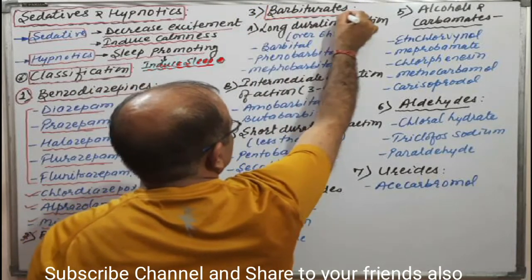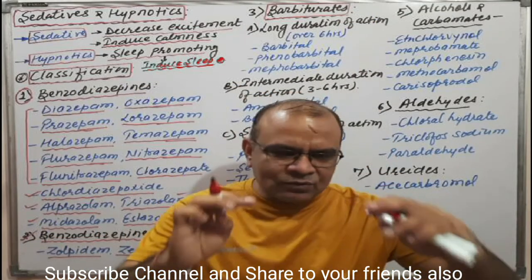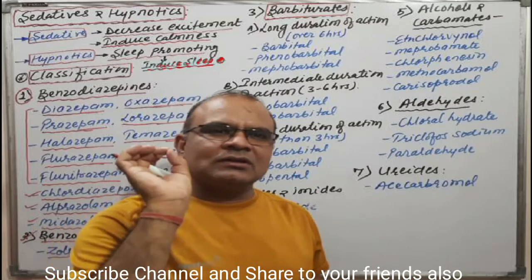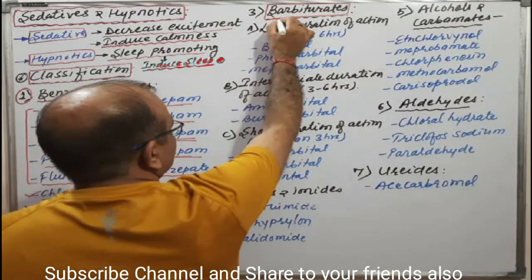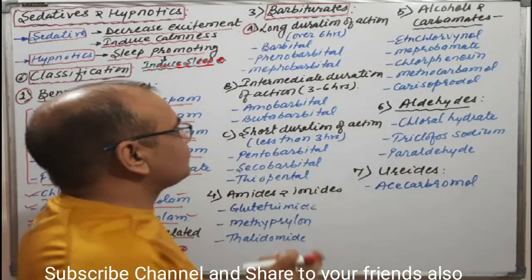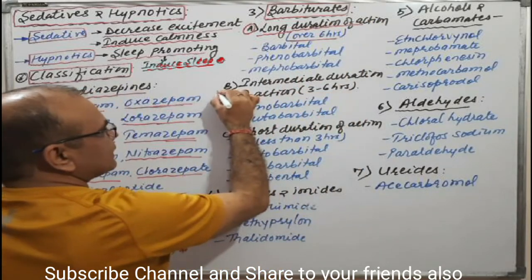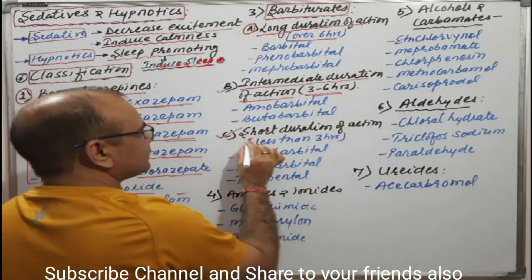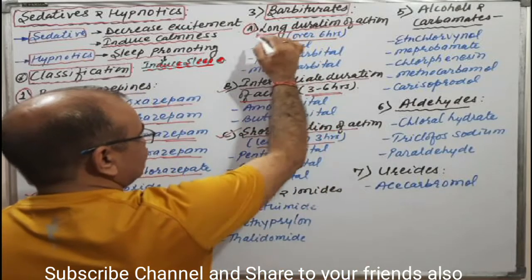The third category is barbiturates — derivatives of barbituric acid. Barbiturates are categorized on the basis of duration of action: longer duration of action means more than six hours; intermediate duration means three to six hours; and shorter duration means less than three hours.